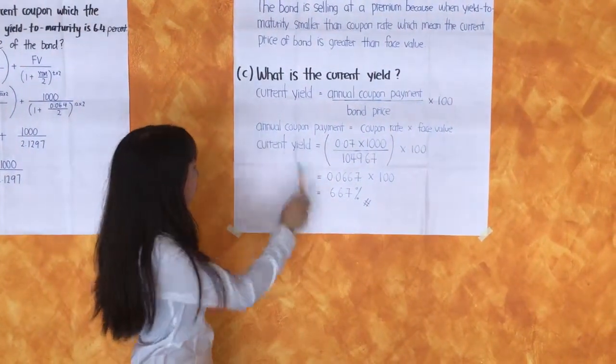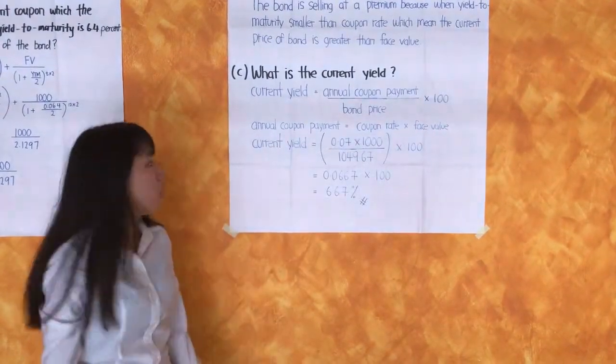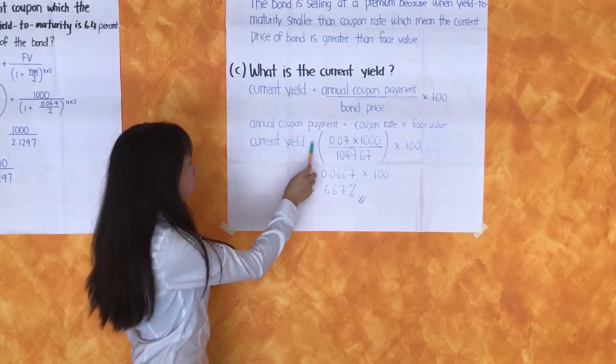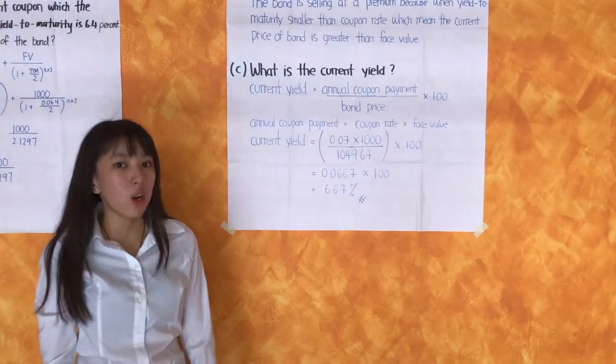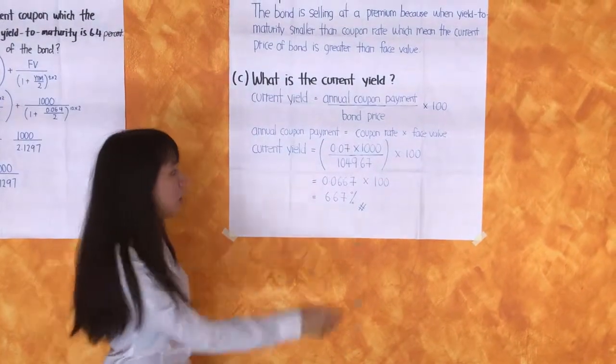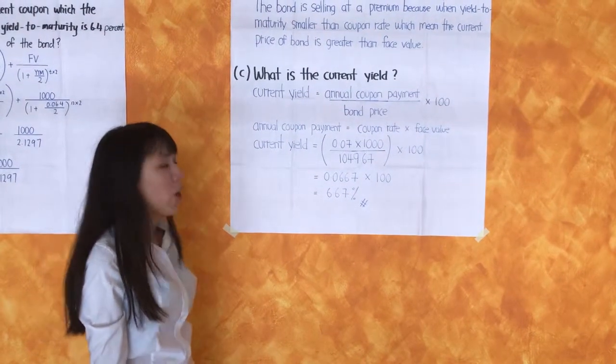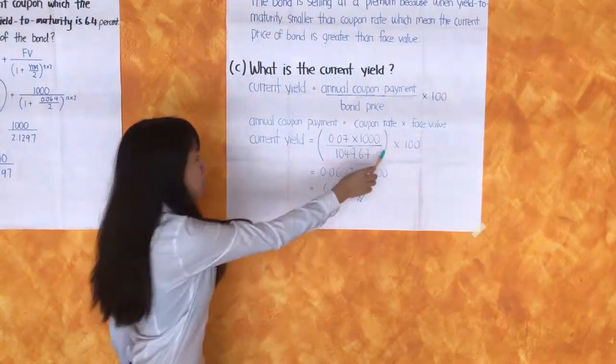How to find the annual coupon payment is the coupon rate times face value. So the current yield equals coupon rate 0.07 times FV 1000 divided by the bond price 1049.67 times 100.